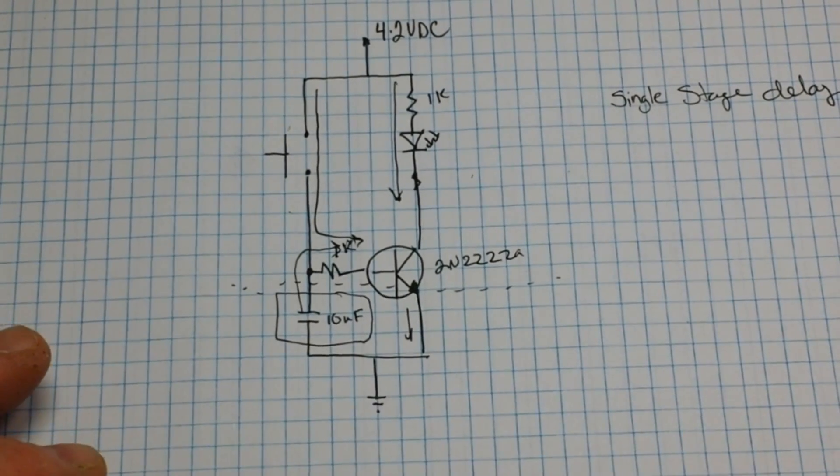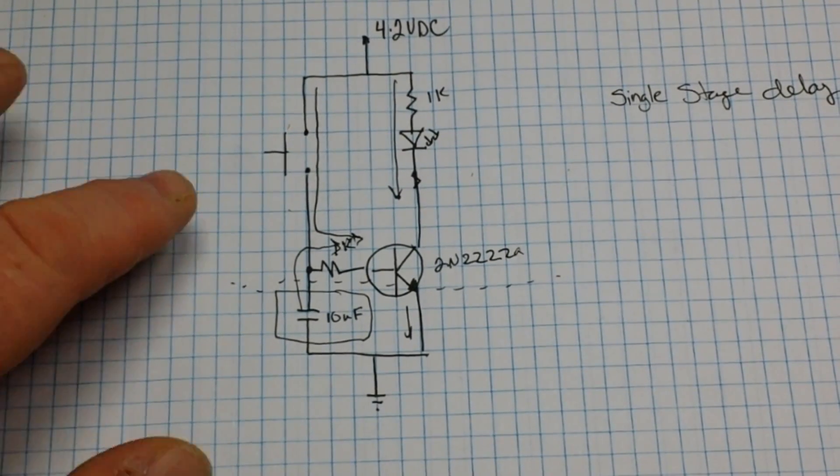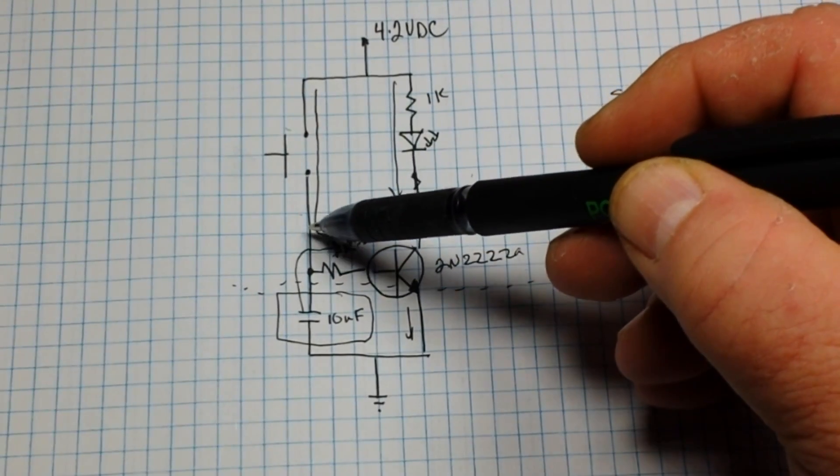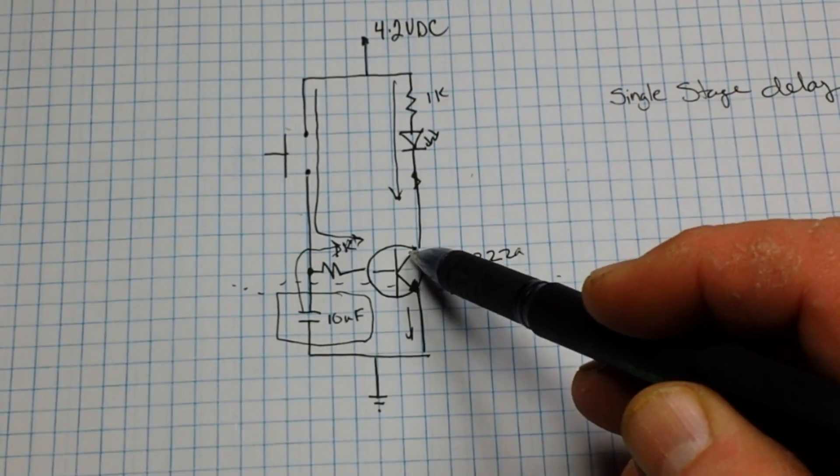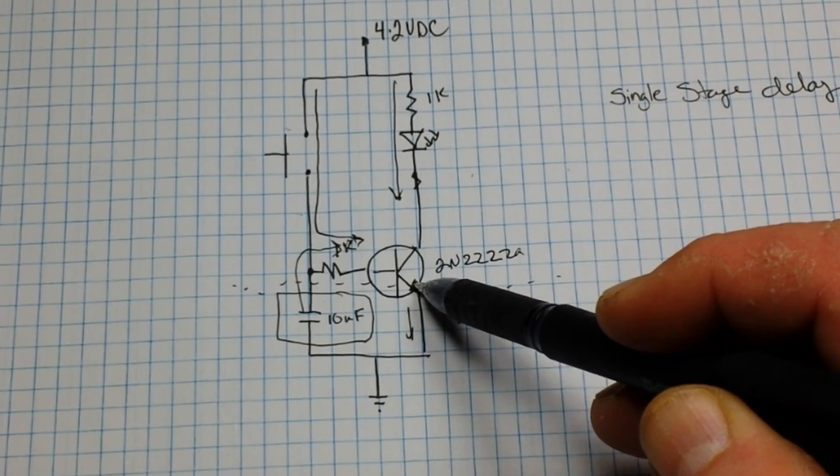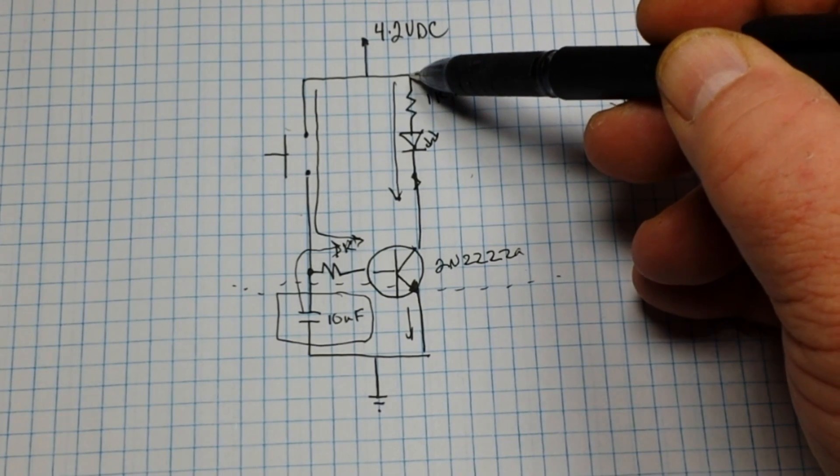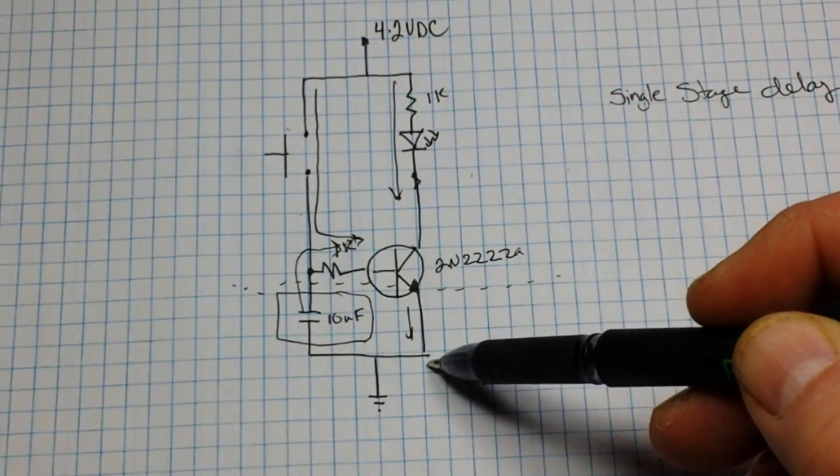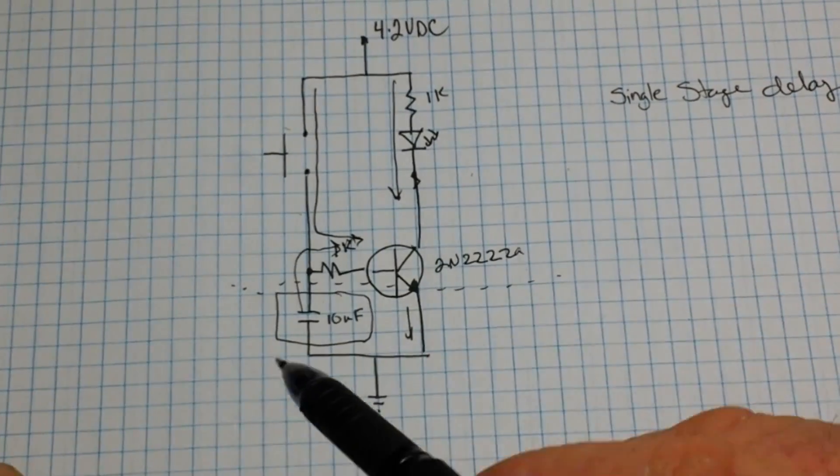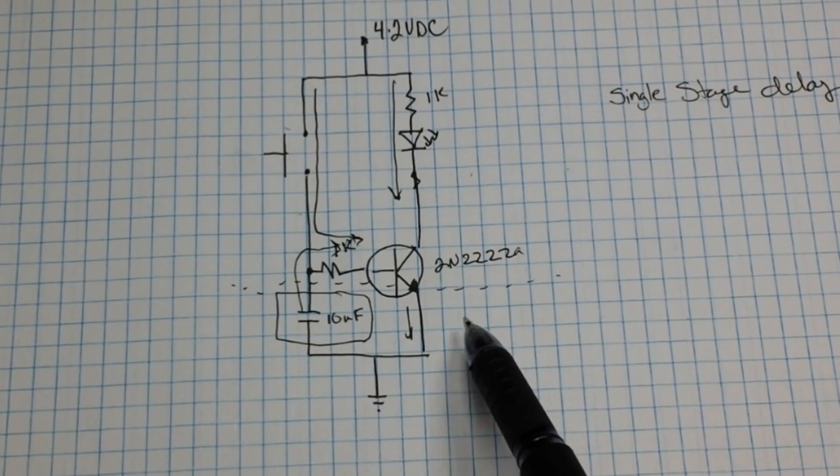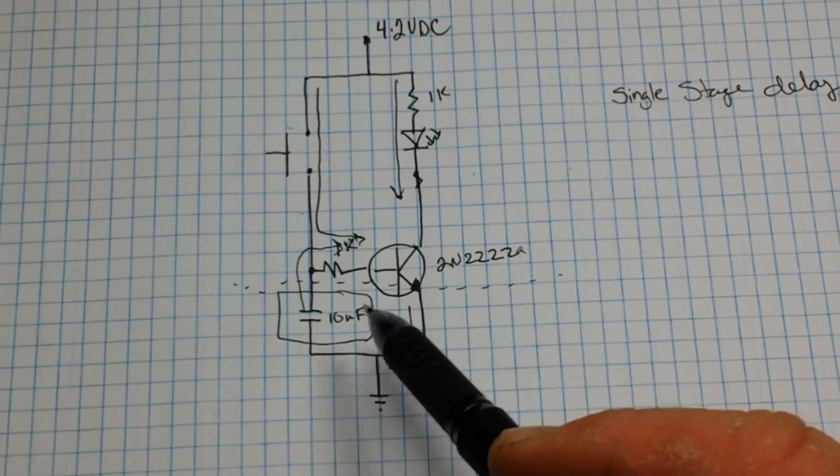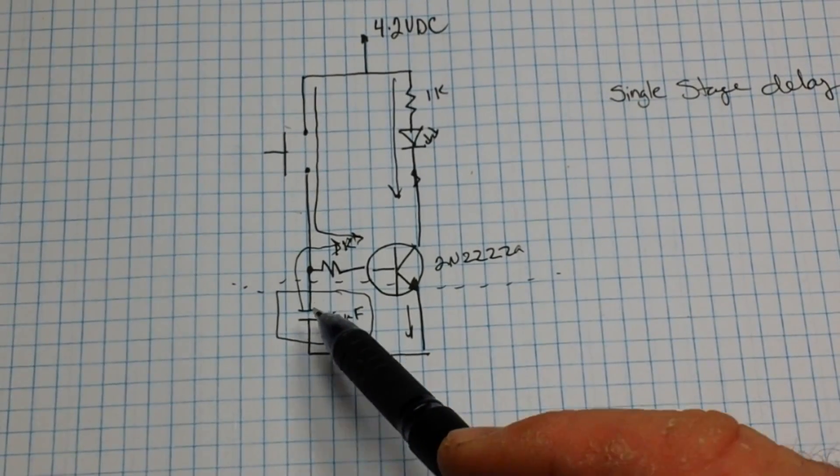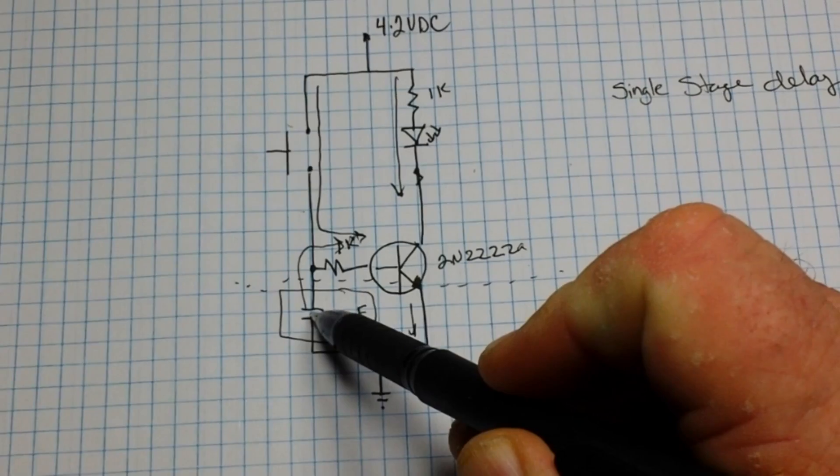So how does it work? Well, we have pressed the button, and when you press the button the current flows down from our source through the base resistor and opens up the collector to the emitter channel, which allows current to flow again from our source through this resistor lighting our LED, through that channel and down to ground. Now at the same time, and that's what this dash line is here for, these are two parallel circuits. At the same time that that button is pressed, we are charging up this 10 microfarad capacitor.